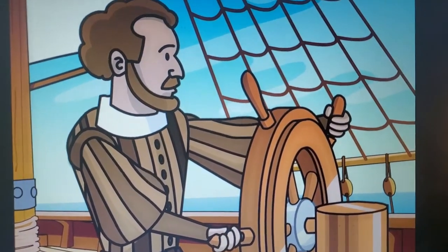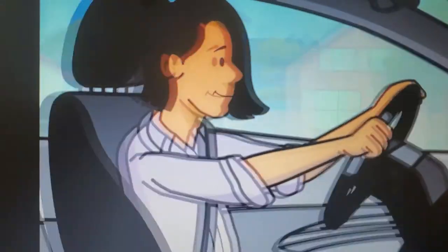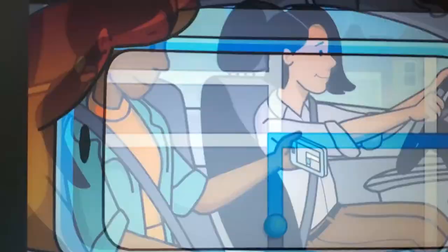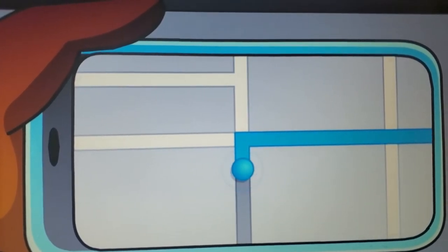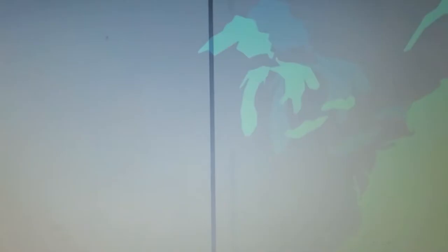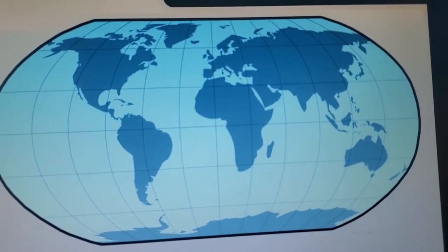Mercator's map was an incredibly useful tool for navigating the seas, and you still can't beat it for accurate directions. A 90-degree turn on a street is a 90-degree turn on a Mercator map. But for learning geography, it's not ideal. For that, you might be better off with a compromise projection.